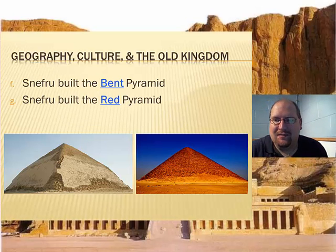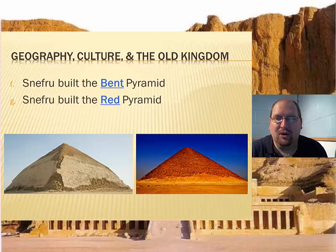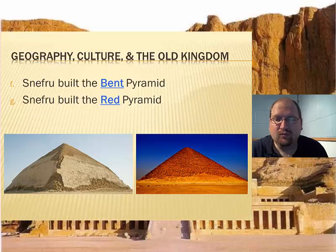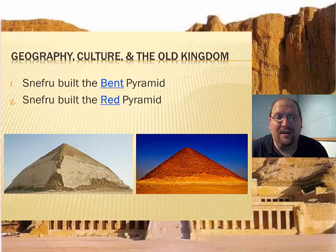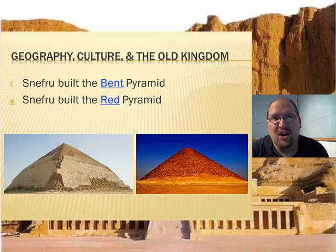Here we see what's known as the Bent Pyramid — you can probably figure out why it's called that. It was built for Sneferu around 2400 BC. Sneferu also built the Red Pyramid. Before these, Sneferu had actually built another pyramid known as the Meidum Pyramid, which took more of a square shape from top to bottom. It is unknown whether these pyramids were used as tombs for Sneferu, since his body has never been found within any of the three pyramids — so they don't actually know if the purpose was ceremonial, as a tomb, or something else.